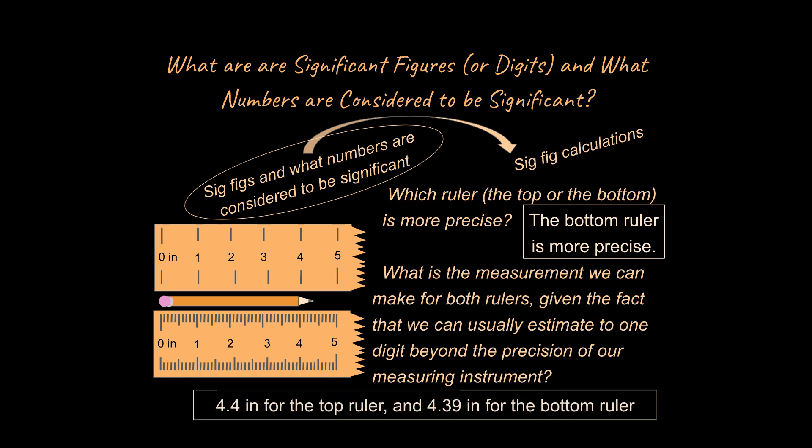Okay, and so hopefully you came up with something like this. You could say that this would be 4.4 inches. This would be 4.39 inches down here. And notice that we can estimate to one digit beyond whatever the precision of our device is. Usually for most classrooms that is totally fine. If you're a professional scientist or you're working for NASA or something that's not going to be fine. For our purposes that is fine to estimate the last digit.